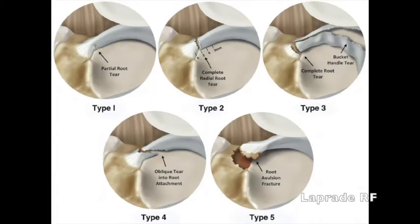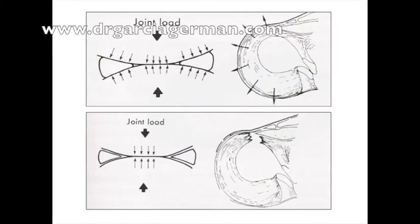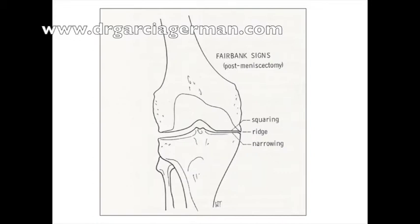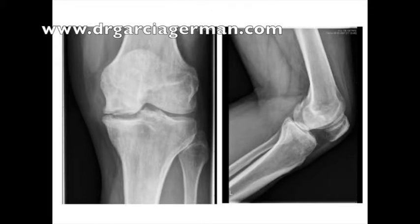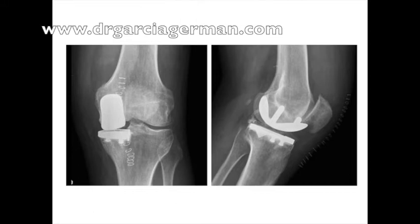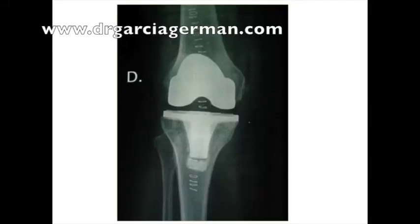Root tears are those that affect the insertion of the meniscus to the tibial plateau, whether anterior or posterior. Just like in any other complete radial tear, the meniscus will have no capacity to absorb hoop stress, and therefore we will see degenerative changes similar to those seen with a complete meniscal resection. It is probable that a lot of the spontaneous osteonecrosis of the femur and symptomatic bone edema are associated with posterior root tears, leading to progressive degenerative changes in the medial compartment requiring partial or total knee replacement.